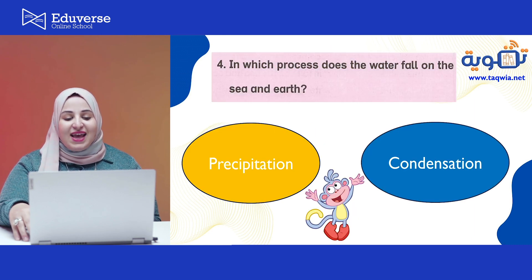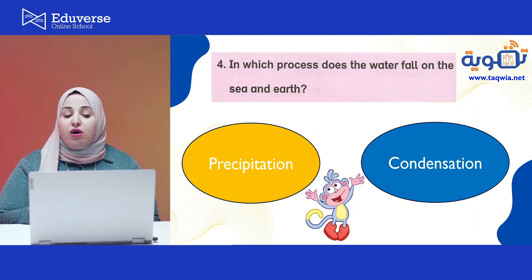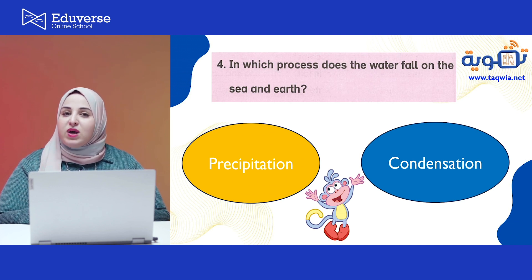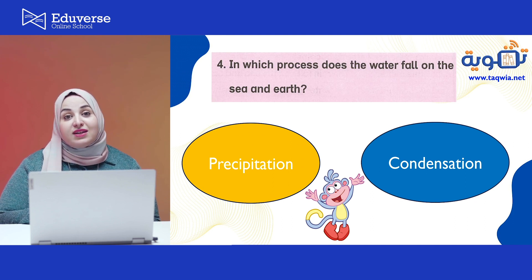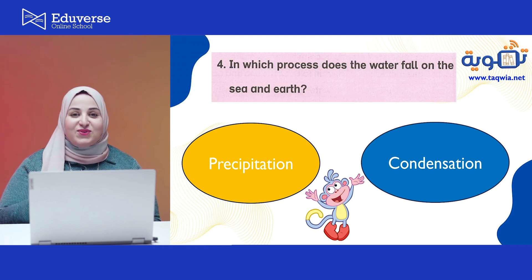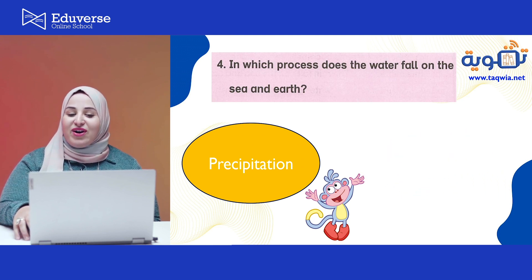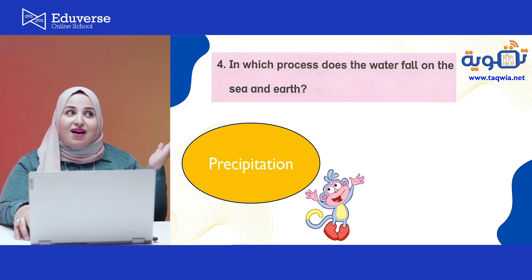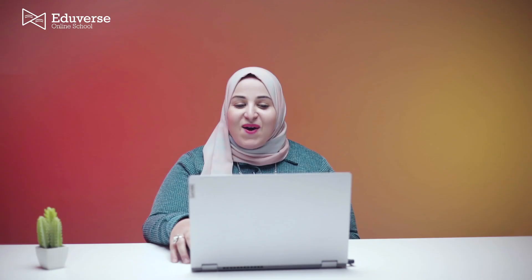Another question: in which process does the water fall on the sea and earth? Is it precipitation or condensation? When we have the rain falling from the sky to the earth — yes, this is precipitation! Precipitation is when the rain that we all love comes from the sky and falls to the ground.